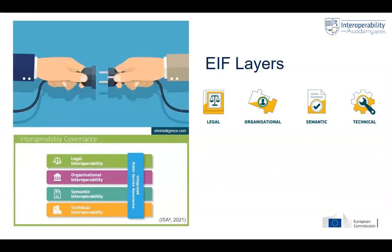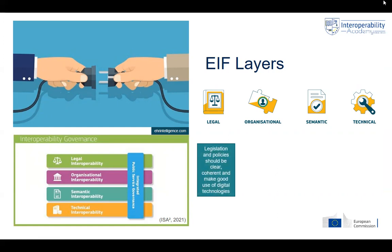The EIF consists of four layers and one cross-cutting layer. The four interoperability layers are the legal, organizational, semantic, and technical ones. The whole interoperability approach is governed through an interoperability governance put in place at the EU level together with the member states. This cross-cutting layer focuses on public service governance that relies on the four interoperability layers.